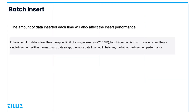The amount of data inserted at a time also affects insertion performance. For the same amount of data, inserting batch data will be faster than inserting data one at a time. It is important to note that the upper limit of a single batch of data is 256 megabytes, so when we do data insertion, we need to create batches that fit under this constraint.